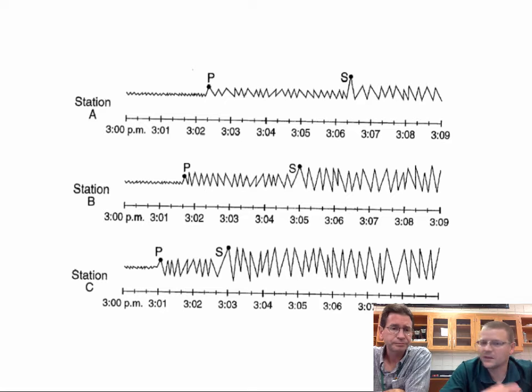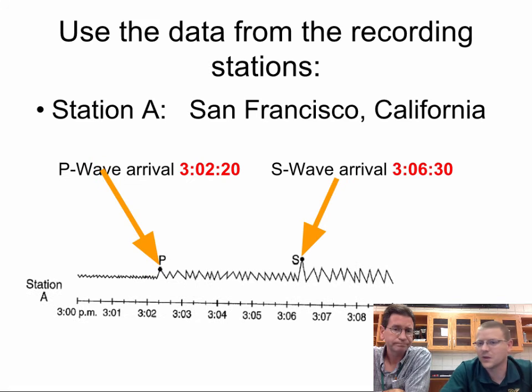So the big thing we want to get out of these is when you see a seismograph, find when the P wave arrives, and then find when the S wave arrives. That's going to tell you distance. So in this one, you can see the P wave and S wave arrival for, say, station A in San Francisco, and that gives you a time difference of about 4 minutes and 10 seconds. You do that and repeat that trial for each station that does the measuring.